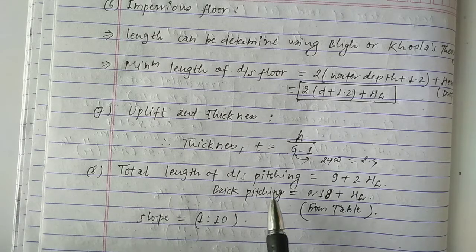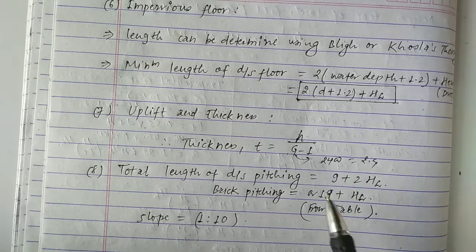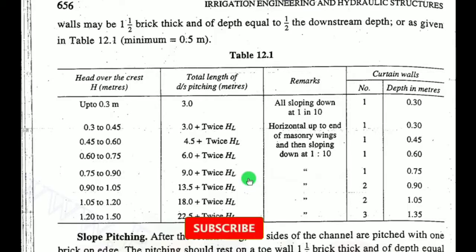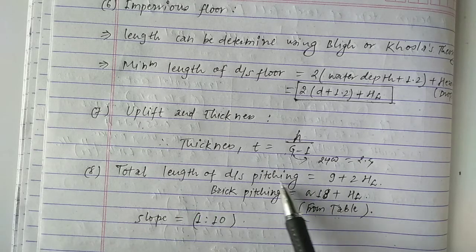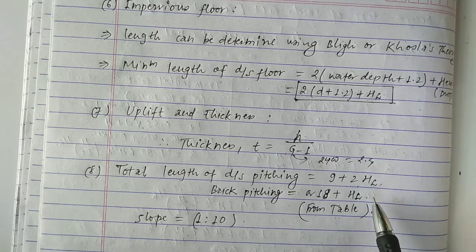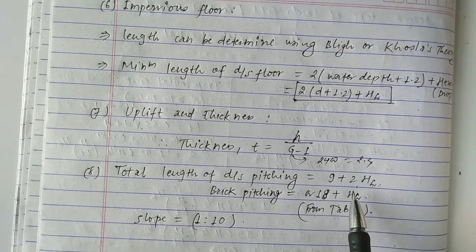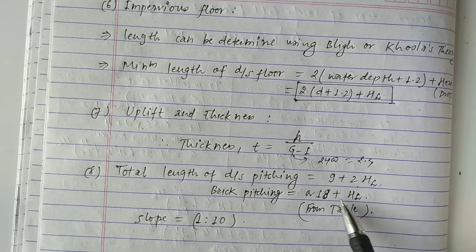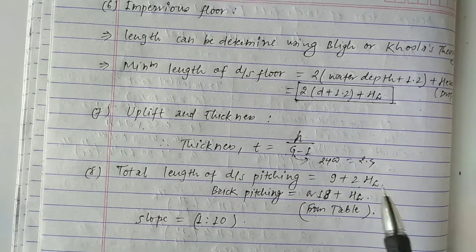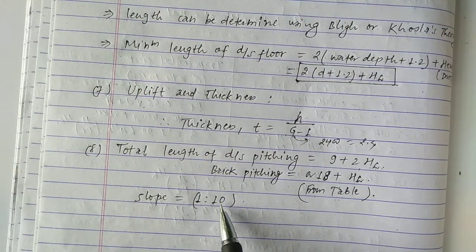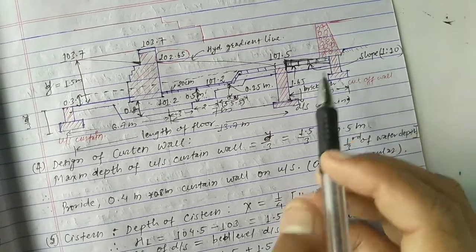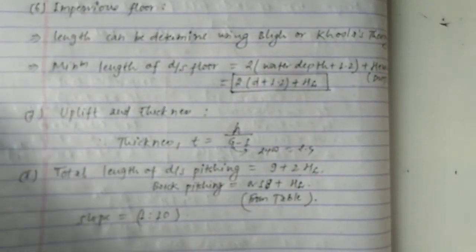Step 8 is the total length of downstream pitching. This can be calculated using a table. Generally, we use the formula: pitching length = 9 + 2HL, where HL is the head difference already calculated. Brick pitching can also be taken as 18 + HL depending on the table. The slope for pitching is taken as 1:10.